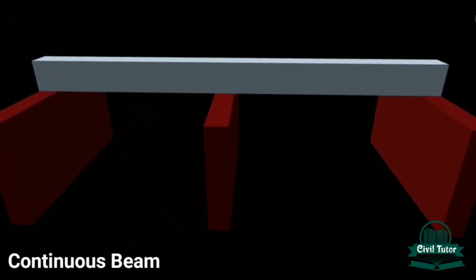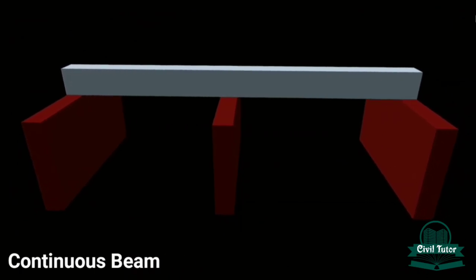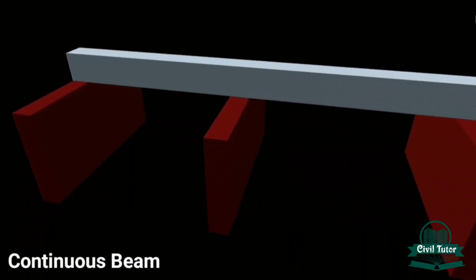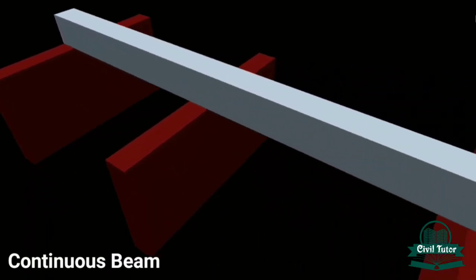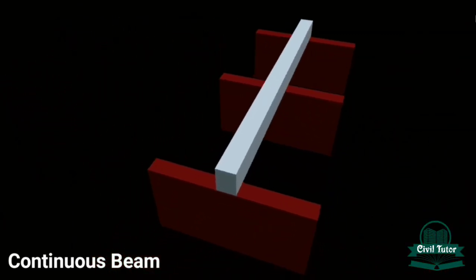The fifth one is the continuous beam. It's a type of beam which is spread over more than two supports along its length. As you can clearly see here, the total span of the beam is supported by three walls forming more than one span.